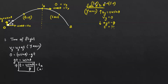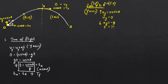If air resistance is ignored, the time of rise equals the time of fall. Therefore, the total time of flight — the time for the entire journey — is the sum of both: u sinθ/g (rise) + u sinθ/g (fall) = 2u sinθ / g. This is the time of flight.